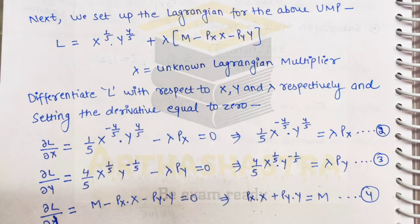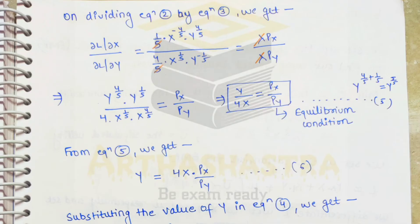On dividing equation number 2 by equation number 3 and doing some manipulations — as you can see on screen — we get equation number 5, our consumer equilibrium condition: (y/4x) = px / py. This is the equilibrium condition of the consumer.